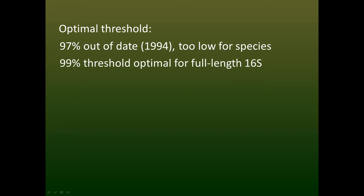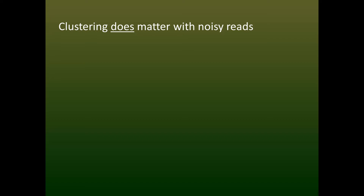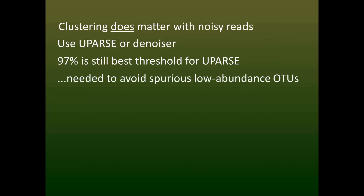For full-length sequences, the optimal threshold for species is around 99%. For the popular V4 hypervariable region of 16S, the optimal threshold is 100%. In other words, denoised sequences are the best possible approximation to species without any further clustering. Note that even though 97% is too low for species, it's still the best threshold for U-Pars if you want to avoid spurious low-abundance OTUs. Just keep in mind that U-Pars may tend to lump different species together into the same OTU.